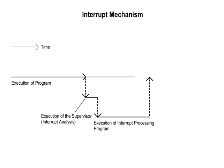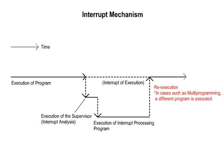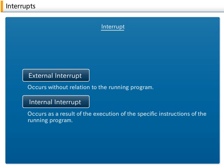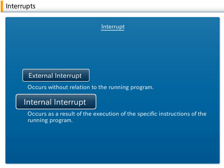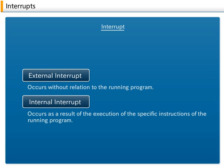After the interrupt processing is completed, the original program is executed again or a different program is executed. The causes that generate interrupts can be broadly classified into external interrupts and internal interrupts. External interrupts occur without relation to the instructions of the running program. Internal interrupts occur as a result of the execution of specific instructions of the running program.